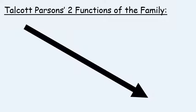I'd like you to start by writing this as your title, and you can see that I have got an arrow going downwards — draw that as well. It's not straight down but slanting downwards. We're going to use this diagram to explain what Parsons believes about the family in general.